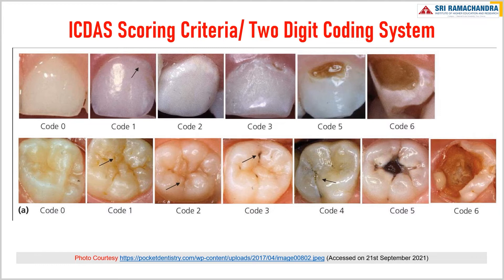Code 5 — distinct cavity with visible dentin: cavitation in opaque or discolored enamel exposing the dentin beneath, involving less than half of the tooth surface. The WHO or CPI probe can be used to confirm the presence of a cavity in dentin by sliding the ball end along the surface; the dentin cavity is detected if the ball enters the opening of the cavity. Code 6 — extensive distinct cavity with visible dentin: cavitation in opaque or discolored enamel exposing the dentin beneath, involving at least half of the tooth surface. Obvious loss of tooth structure and dentin is clearly visible on the walls and at the base of the cavity. The marginal ridge may or may not be present.